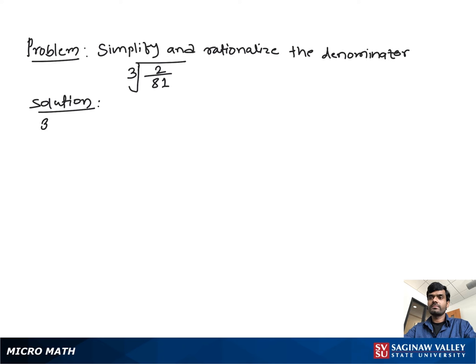Simplify and rationalize the denominator: cube root of 2 over 81. First, we separate the cube root between numerator and denominator, which helps us make a rational number at the denominator.